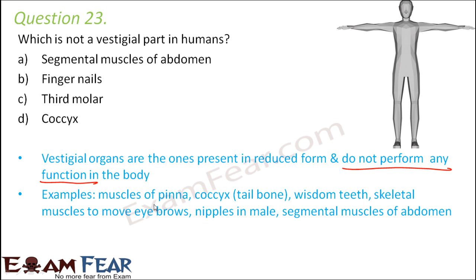Some examples of vestigial organs are: muscles of the pinna, coccyx (the tailbone present in reduced form), wisdom teeth (which are of no use — we get them around 20 to 30 years of age and they do not help in biting or chewing), skeletal muscles to move eyebrows, nipples in males, and segmental muscles of the abdomen.